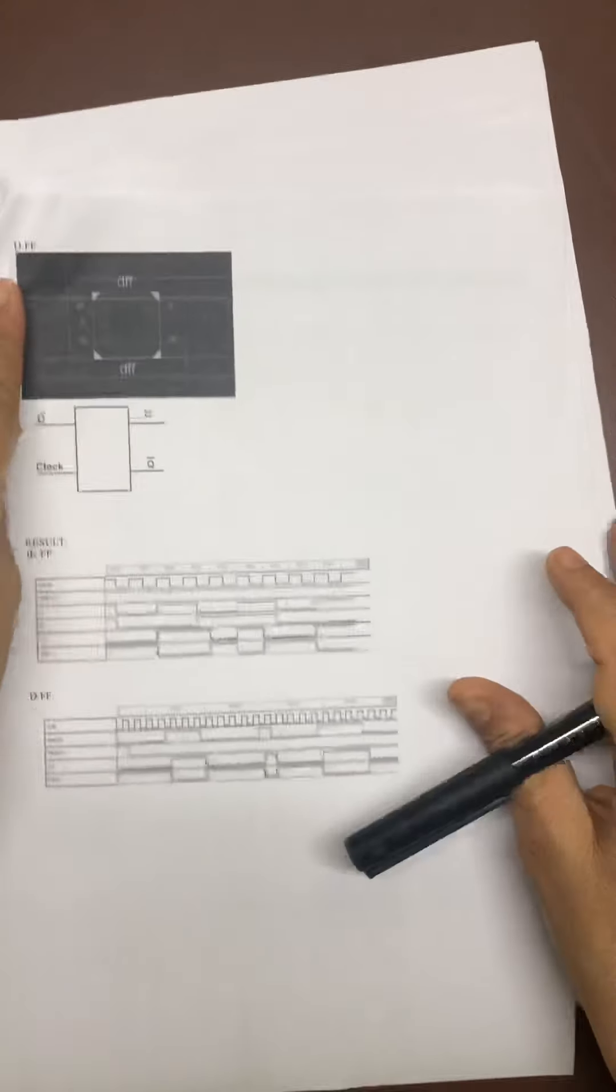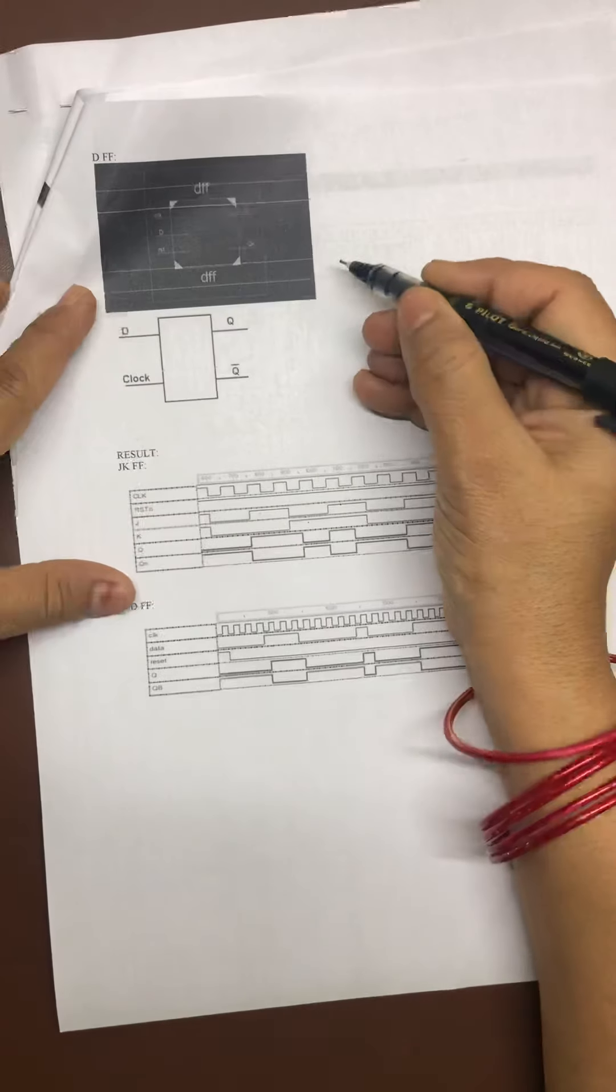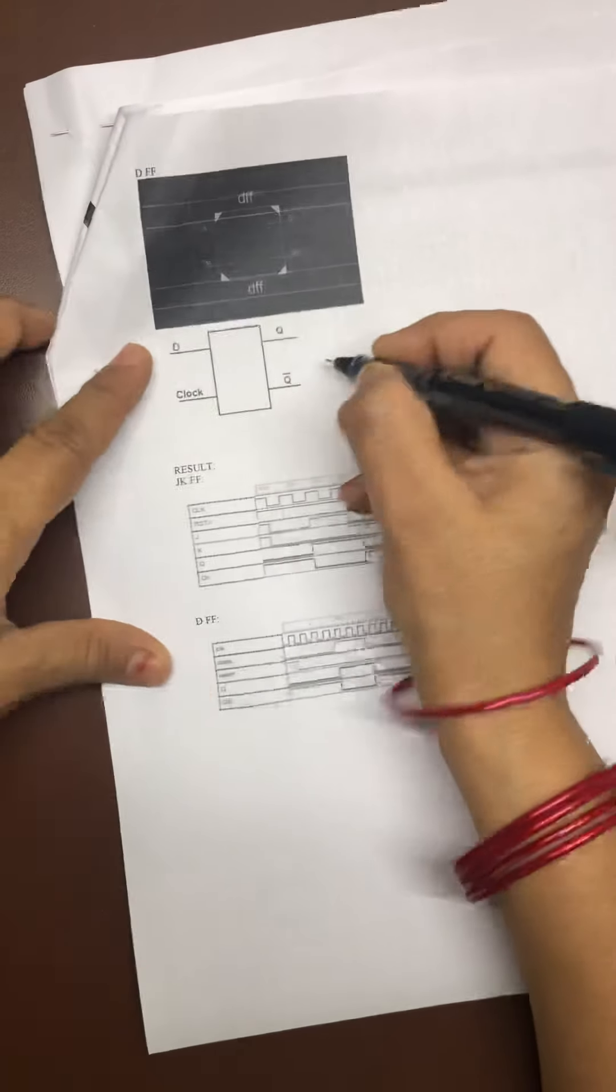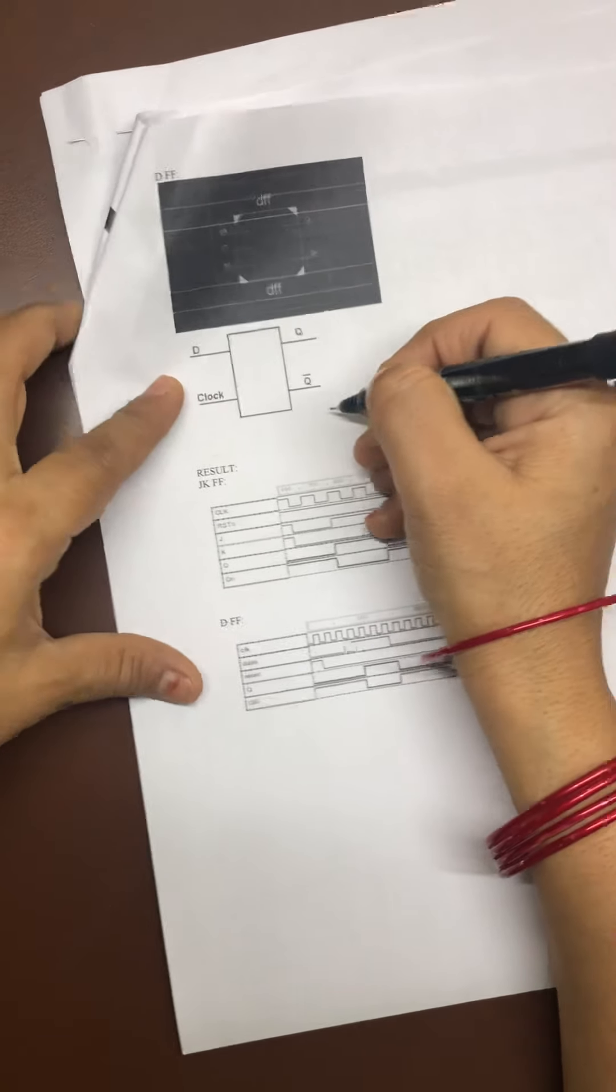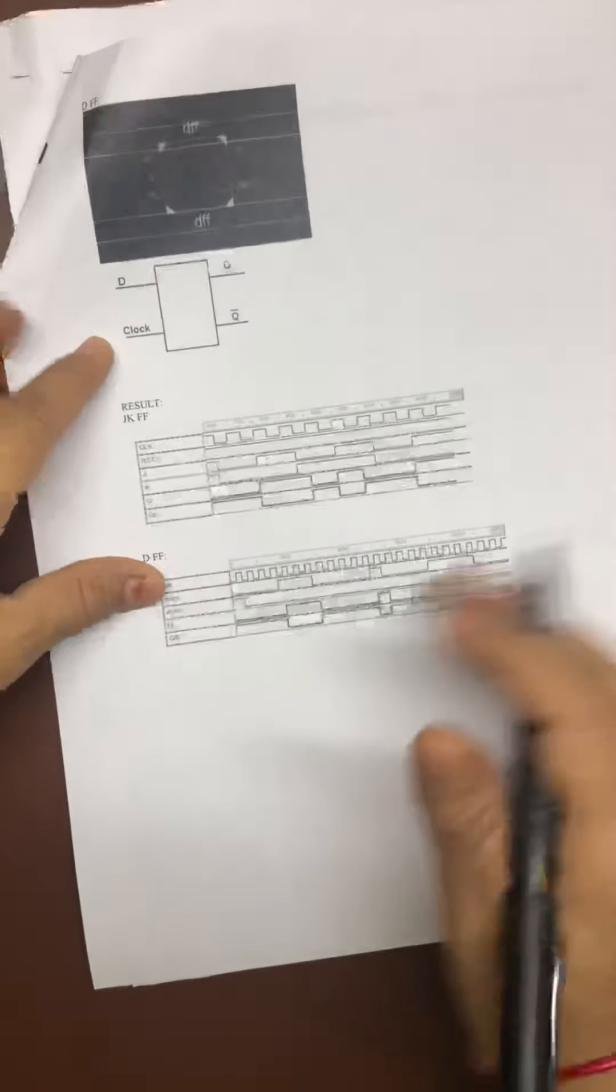You will get this D flip-flop in our RTL schematic. This is my D, clock and Q and Q bar. And this is the waveform.